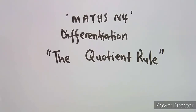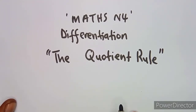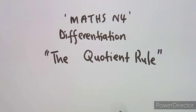Hello guys, welcome back to my channel, Maths on African Motives, still working on maths info. We are working on differentiation. We've got the part we worked on on the product rule, and this time we've got the quotient rule, which is the opposite to the product rule. With the product rule we are multiplying, but with the quotient rule we are dividing — that's the difference between the product and quotient rule.